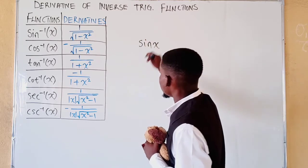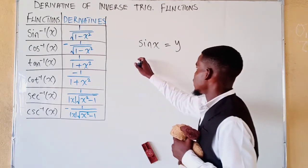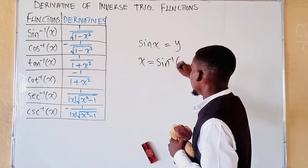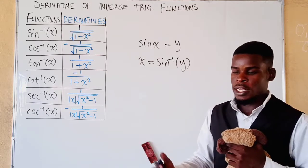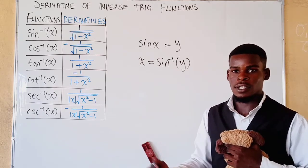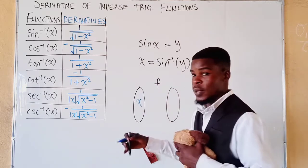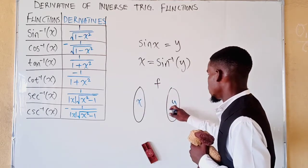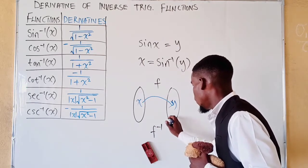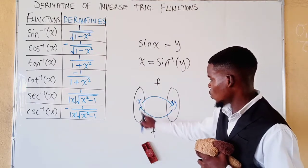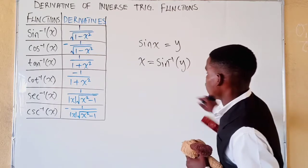If we have a function like sine x equal to y, then the inverse will be x equals sine inverse of y. The inverse of a function is a rule that will undo what a function has done. If a function takes an element x from the domain to the range y, then the inverse is a rule that moves from y back to x — it reverses the direction of that function.